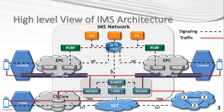The VoLTE architecture requires the user to be connected on EUTRAN, which is represented as eNodeB. The user connected to EUTRAN is then connected with EPC, which is presented by the S-Gateway, P-Gateway, and the MME.